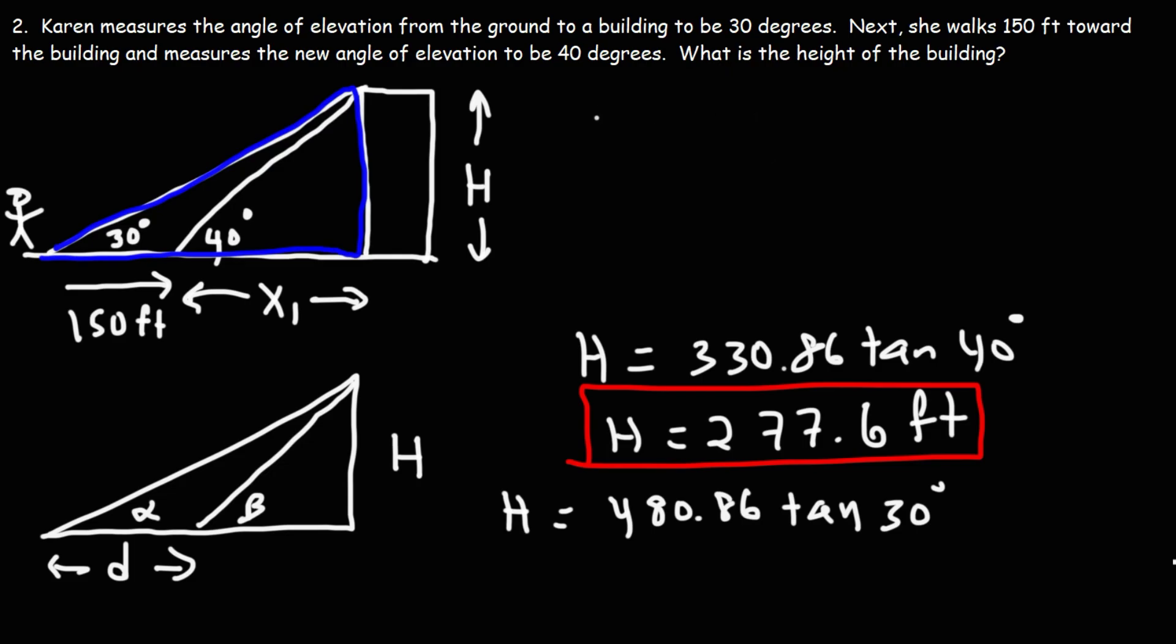The formula that you need is this: h is equal to d tangent alpha tangent beta divided by tan beta minus tangent alpha.